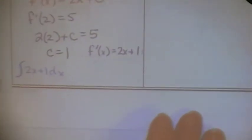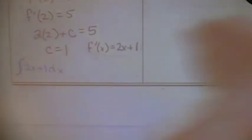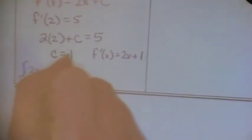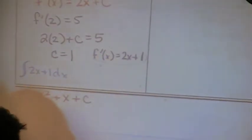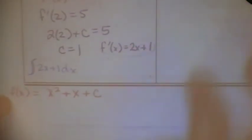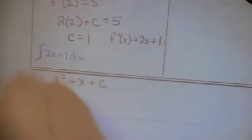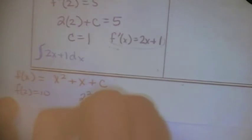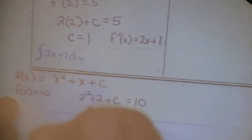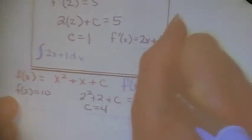Now I can take the anti-derivative of f prime of X, which is 2X plus 1, to back all the way up to the original function. The anti-derivative of 2X plus 1 gives me 2X squared divided by 2, which is X squared, plus X plus C. That's f of X. They gave me f of 2 equals 10, so 2 squared plus 2 plus C equals 10, which means C equals 4. So f of X is actually X squared plus X plus 4.